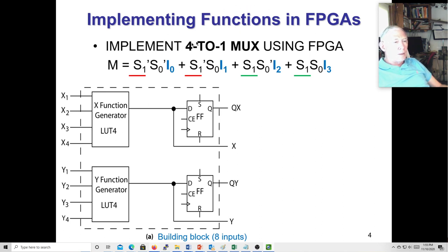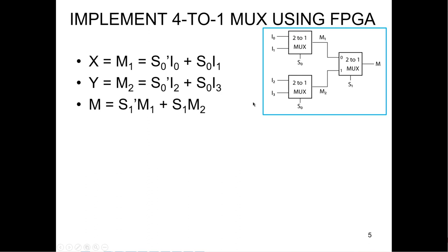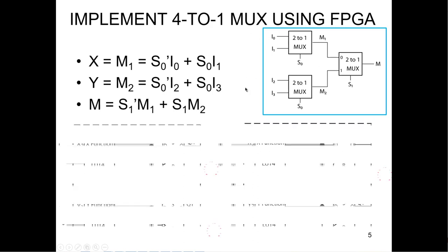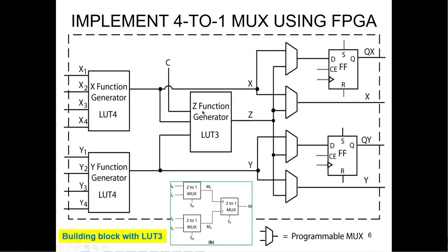If you want to implement a 4-to-1 mux using an FPGA, it's kind of expensive — that's one of the reasons why we like to include muxes in our modules. To make a 4-to-1 mux, it takes three 2-to-1 muxes, and it would take two slices to make it work. If you use three LUT4s, it takes 48 static RAM cells; whereas it's 40 in the second design using a LUT3.